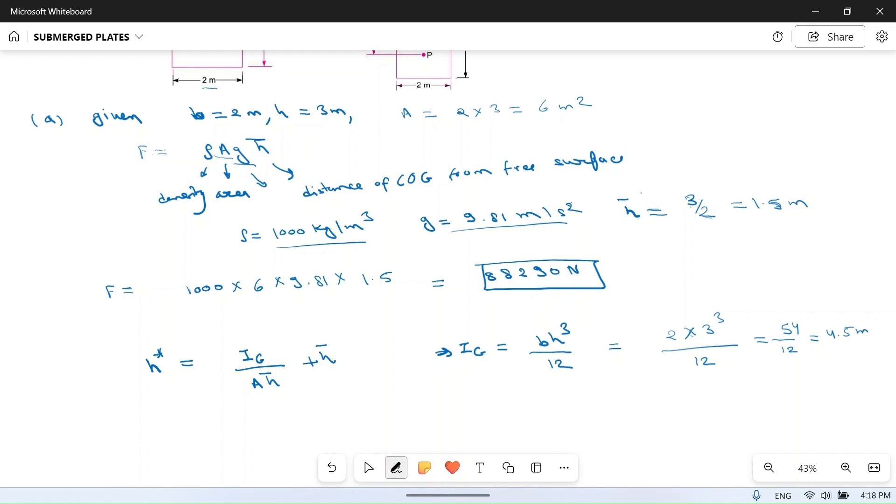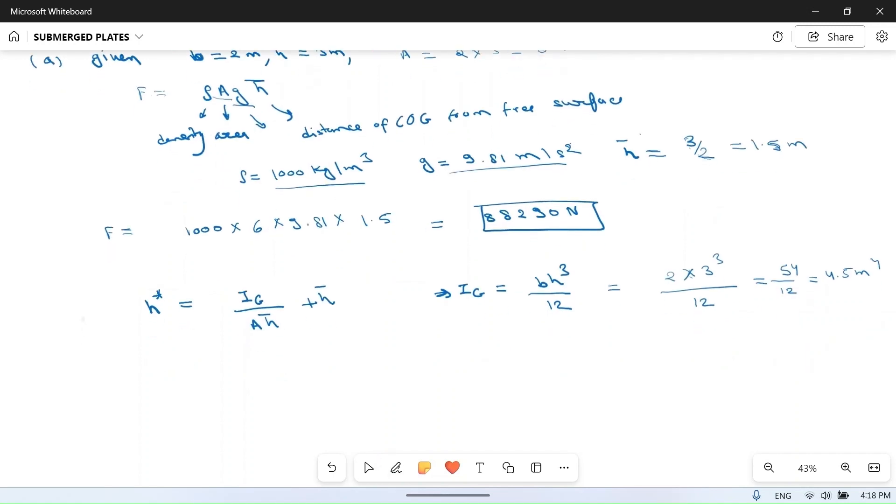So this is Ig. Area is already known, h̄ is already known, it is 1.5 meter. So center of pressure, depth of center of pressure h* is 4.5 divided by area 6 meter square into h̄ 1.5 plus 1.5. So if you calculate it you will get 0.5 plus 1.5 equals 2 meters. So you can see from here that depth of center of pressure is below the center of gravity. So this is for first case.